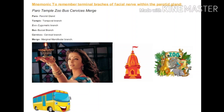Parot stands for parotid gland, to remember that these terminal branches are related to the parotid gland. Temple stands for the temporal branch. Zoo stands for the zygomatic branch. Bus stands for the buccal branch. Cervices stands for the cervical branch — and purposely the spelling of 'services' has been changed. And merge stands for the marginal mandibular branch. So parotemple zoo bus services merge stands for the terminal branches of the facial nerve.